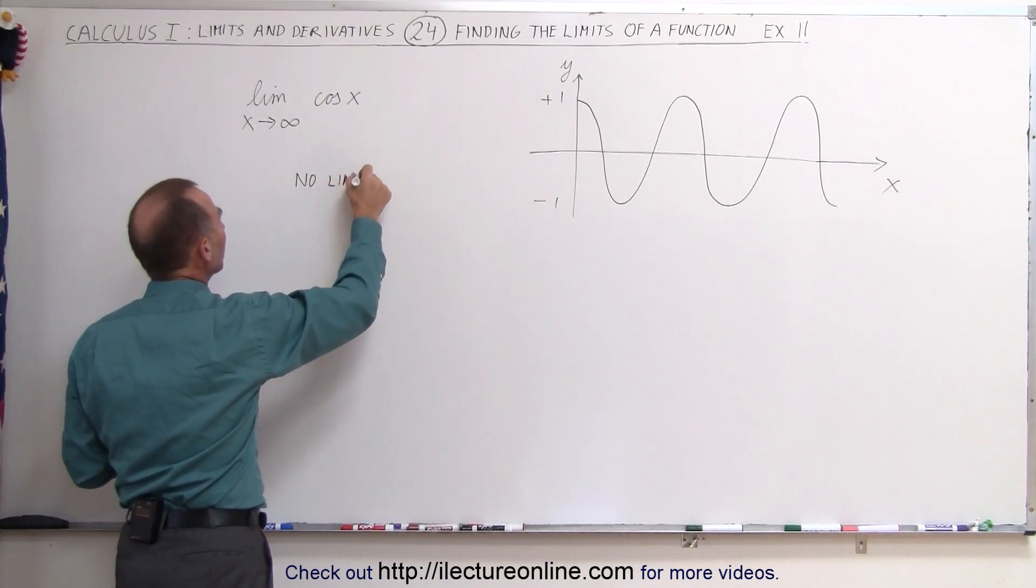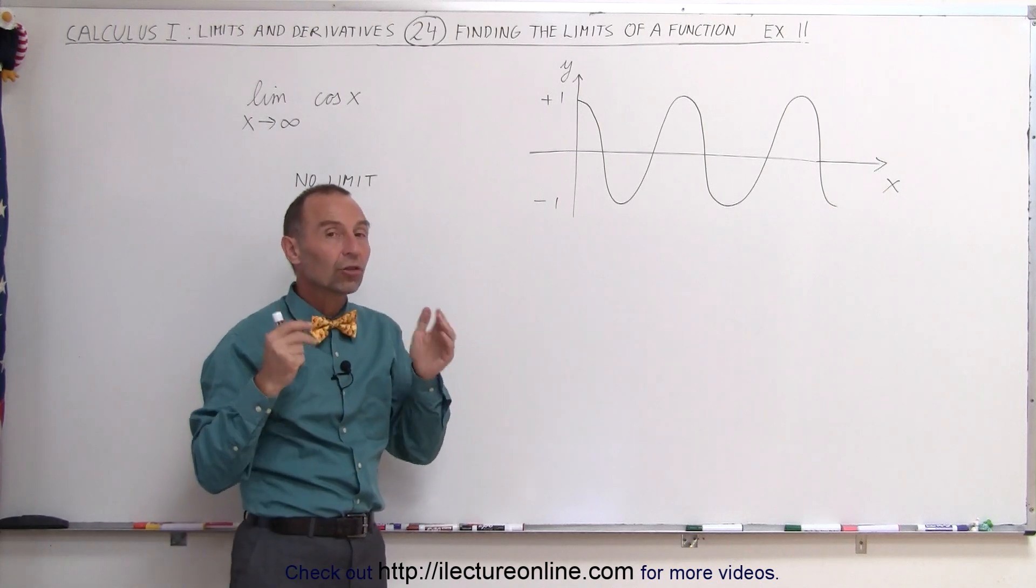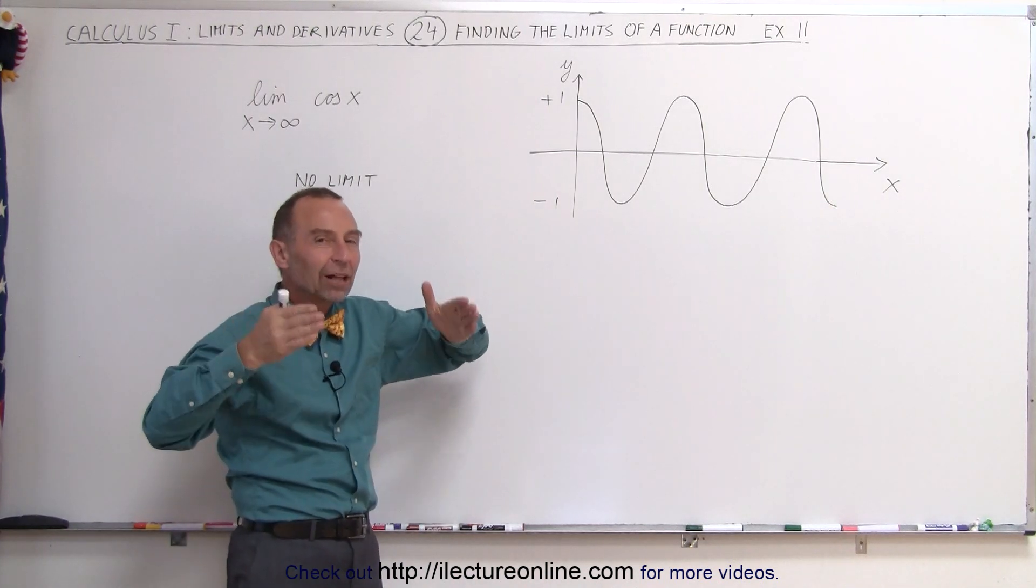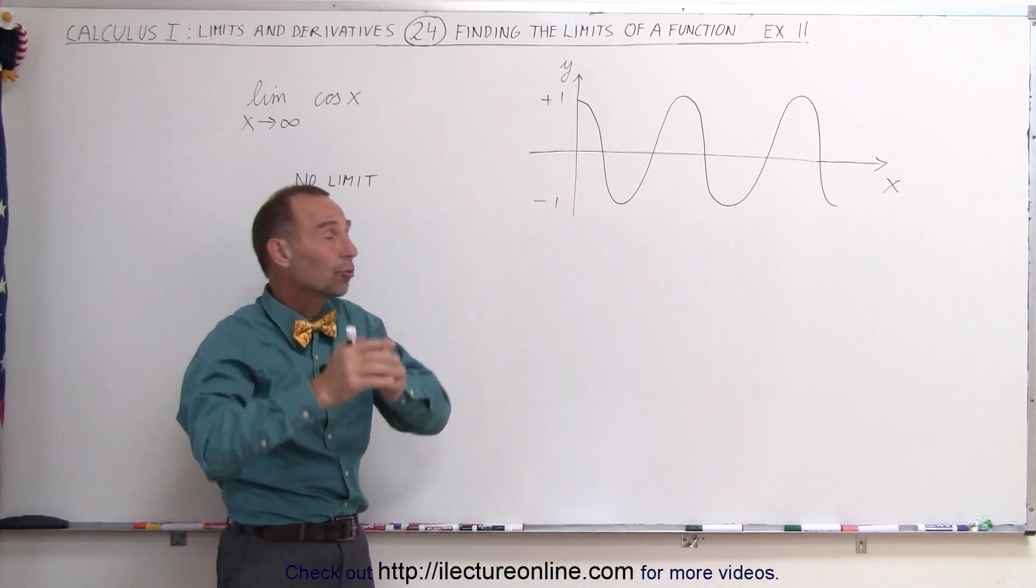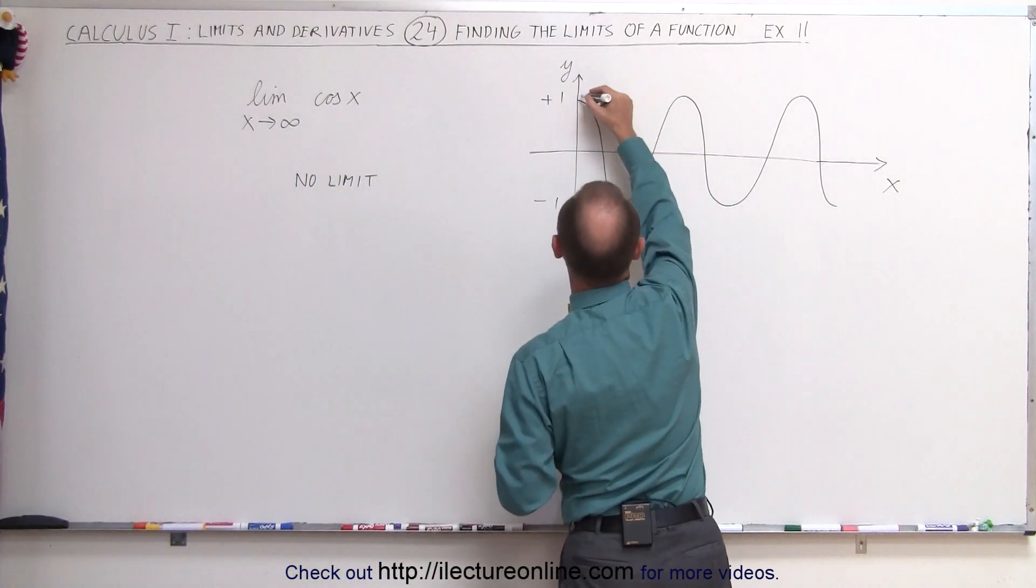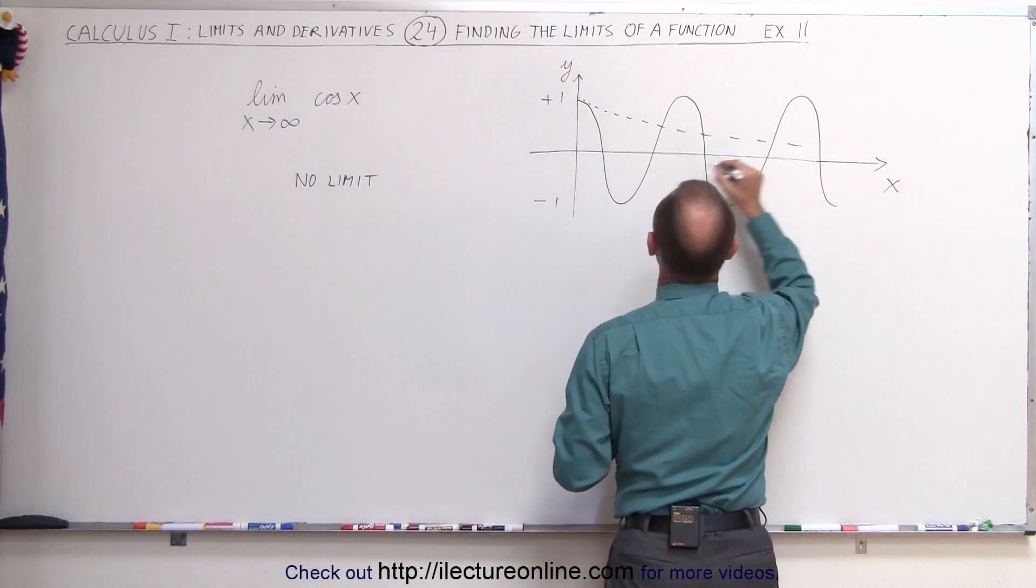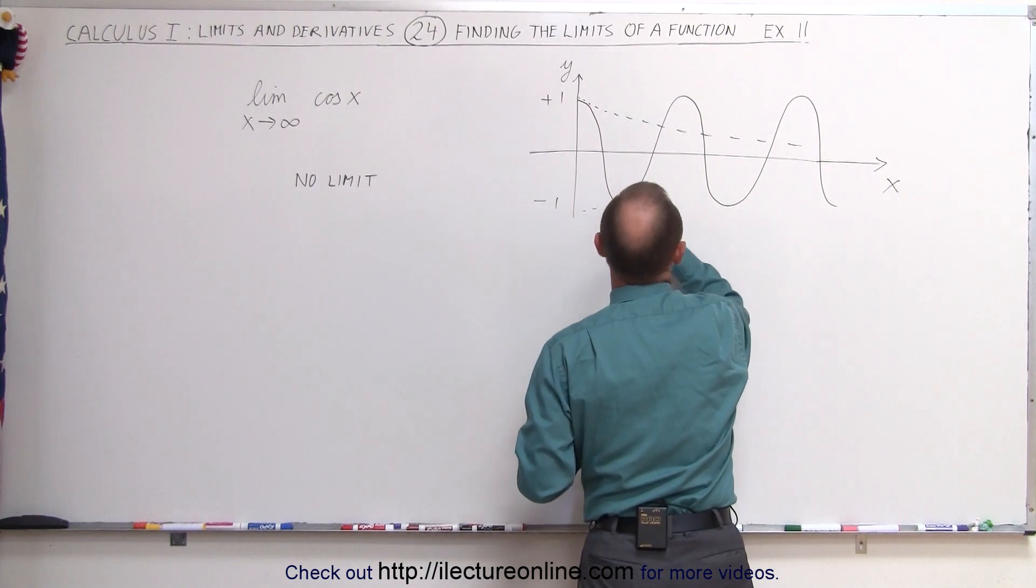The condition for a limit to exist is that as x gets larger and larger, the variation in the value of the function gets smaller and smaller. So you need to have a funneling effect where the value zeros into a particular amount.